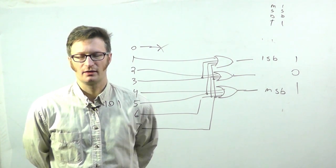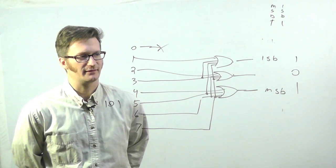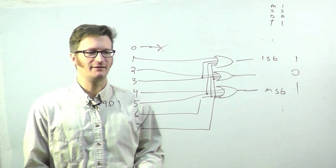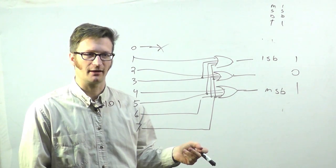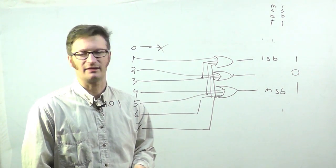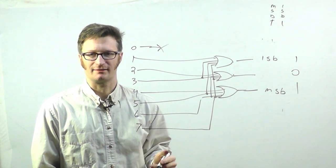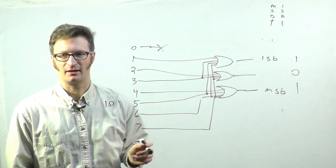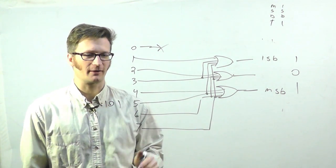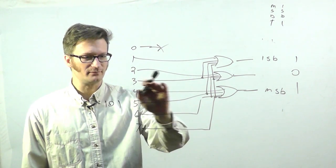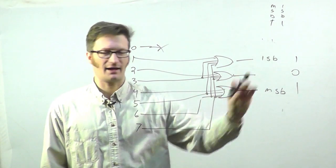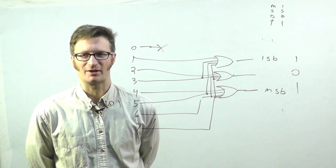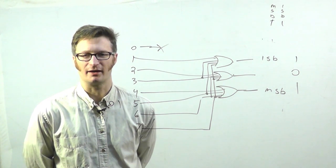An encoder is a simple logic device useful in situations where you have a machine with sensors that might signal an error condition, and it's unlikely that multiple sensors would be asserted at the same time. For example, maybe this is a bump switch saying your machine has gone too far. Input 3 is asserted, and we get that in binary form that can go into our processor — using just 3 I/O lines instead of 8.